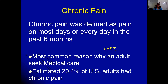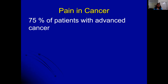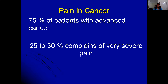We are discussing chronic pain because it is one of the most common reasons why an adult seeks medical care. It is estimated that around 20 percent of the US population has some kind of chronic pain. Different chronic pain conditions include neck pain, back pain, fibromyalgia, and rheumatoid arthritis. In cancer specifically, 75 percent of patients with advanced cancer will suffer from some kind of pain at some point.